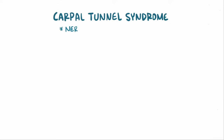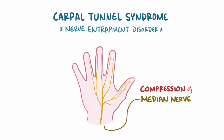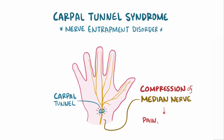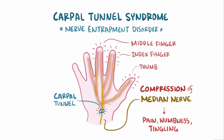Carpal Tunnel Syndrome is a nerve entrapment disorder that results in the compression of the median nerve, which winds its way through the wrist through a narrow passageway called the carpal tunnel. This compression typically causes pain, numbness, and tingling in the thumb, index finger, middle finger, and thumb side of the ring finger, which are the areas of skin innervated by the median nerve.